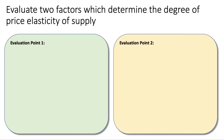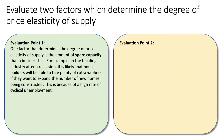One factor that determines the degree of price elasticity of supply is how much spare capacity a business has to operate with. My example here is the building industry. After a recession, coming out of a downturn, builders and house-building firms will be able to hire plenty of extra workers if they want to increase the rate of new home building, because of a high rate of cyclical unemployment.